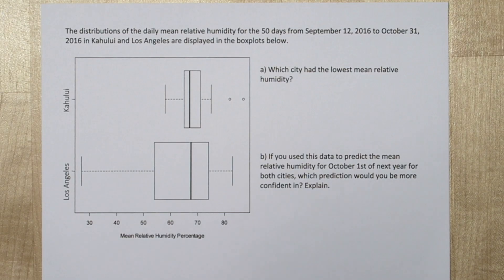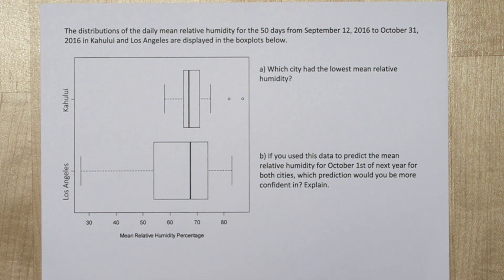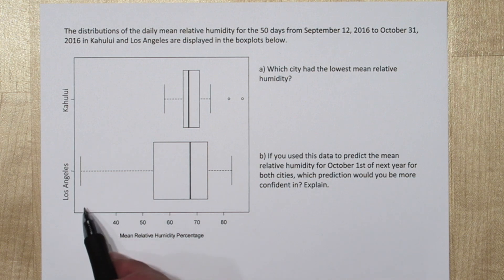When it asks for which city has the lowest mean relative humidity, they're not asking for which has a lower mean of the data set. Each day they find the mean relative humidity and record that value, so each city has 50 mean relative humidity percentages recorded. We're looking for the minimum of the data set, which in this case is Los Angeles.